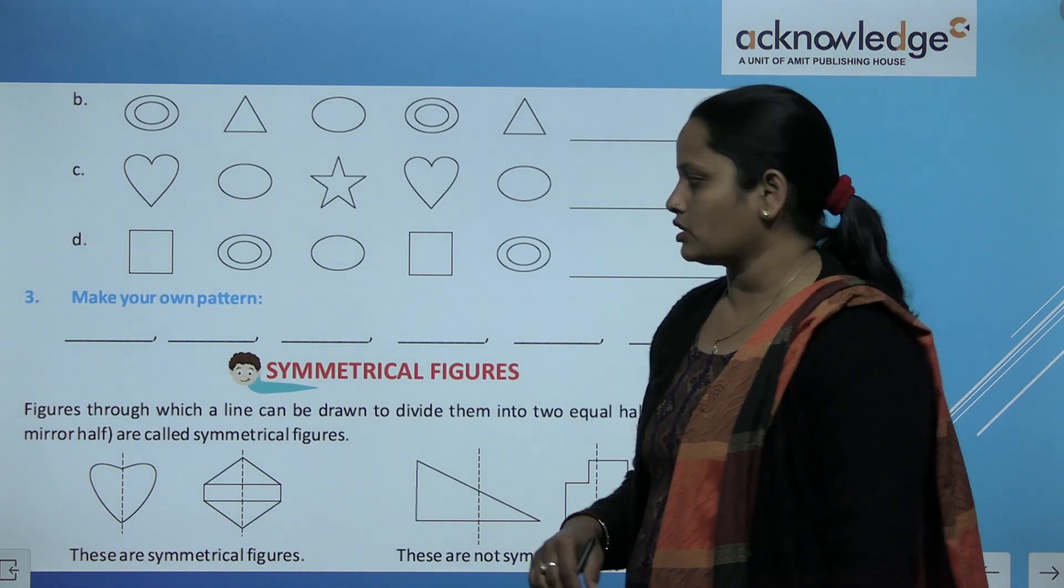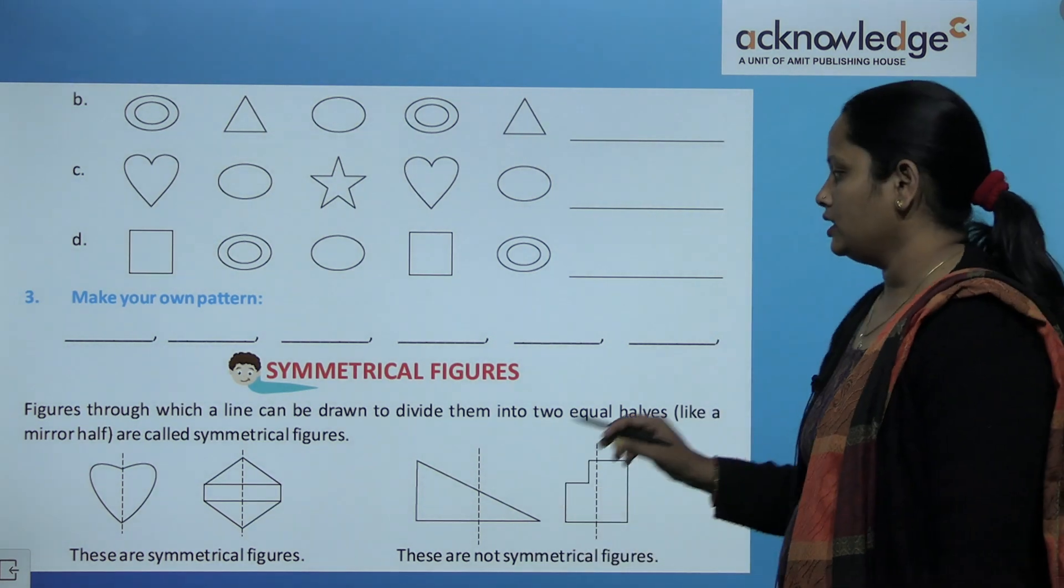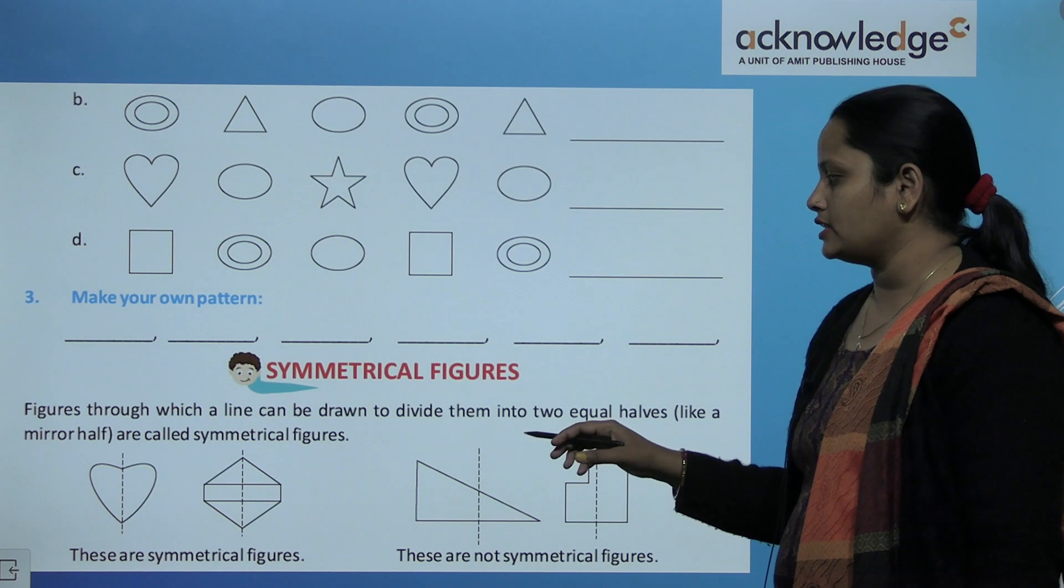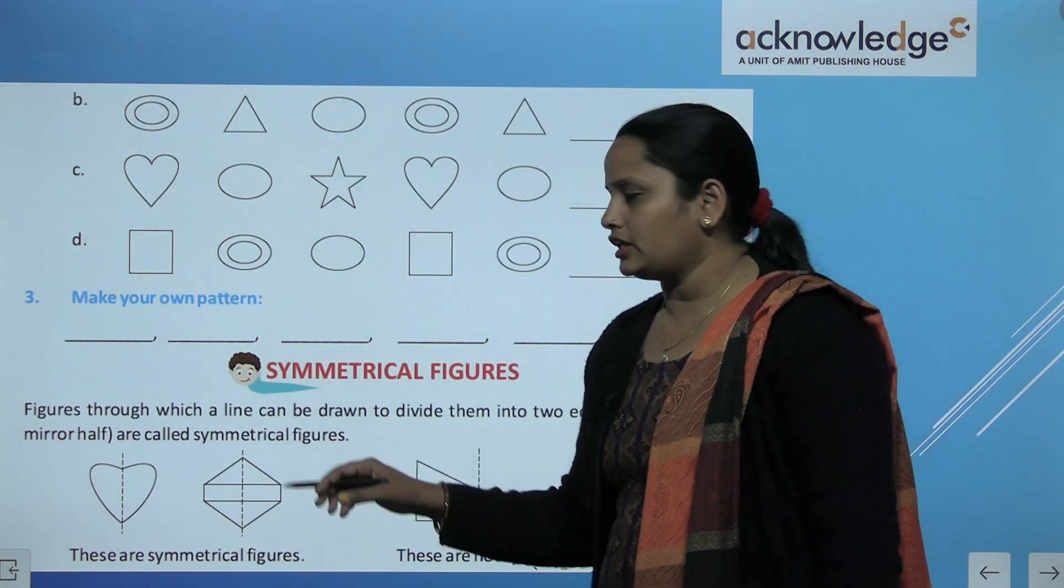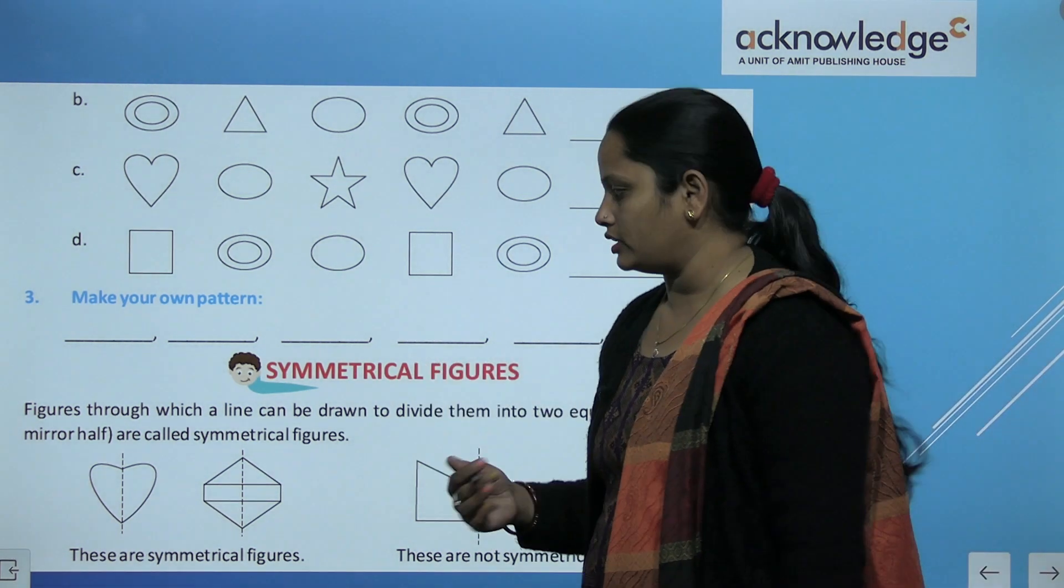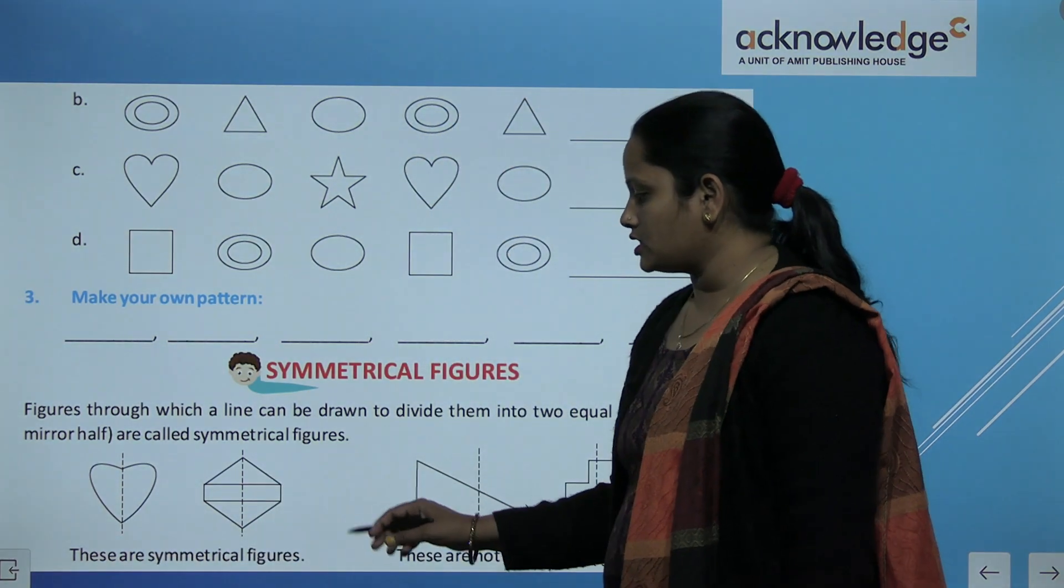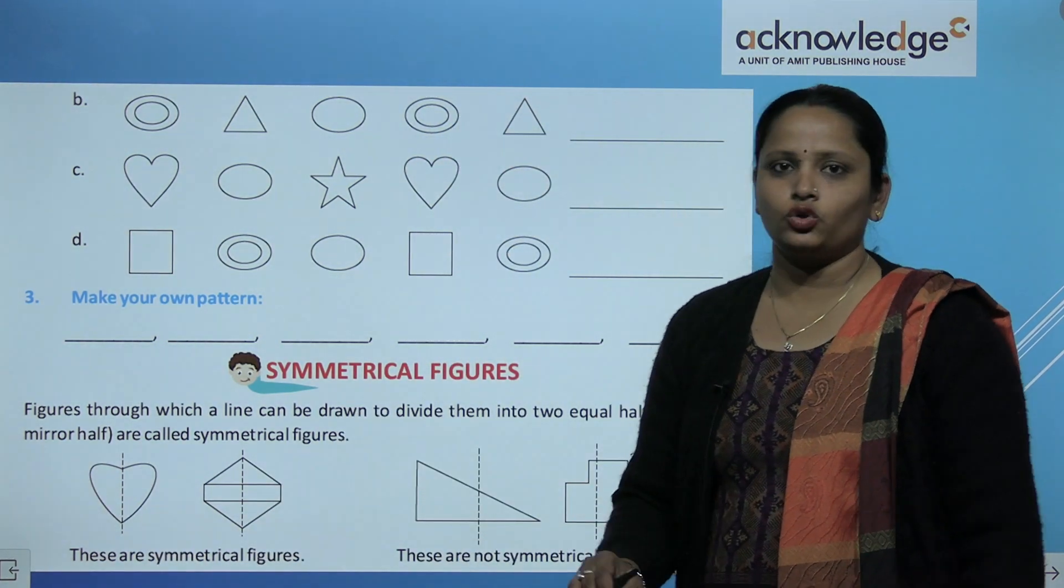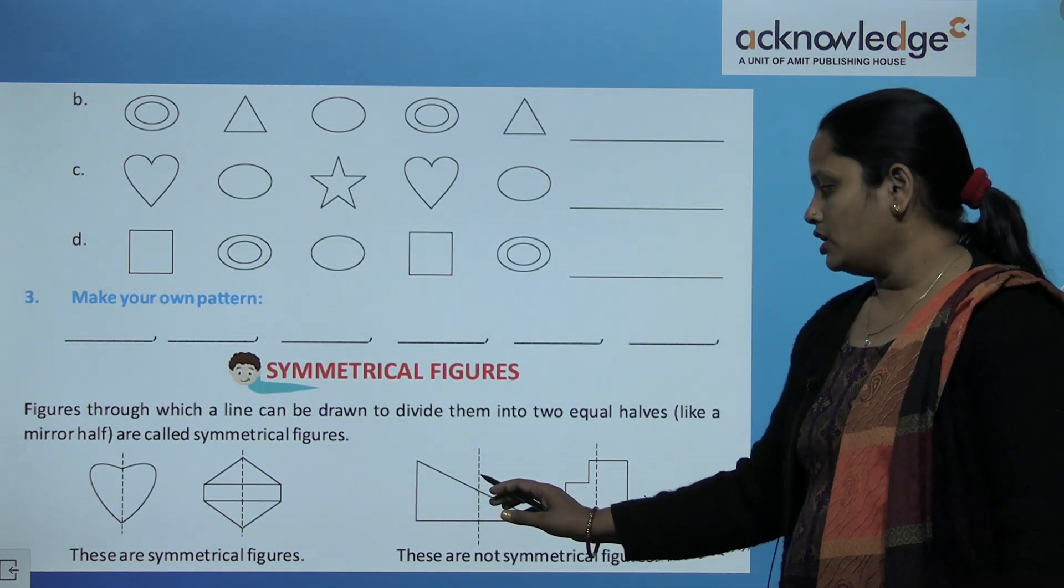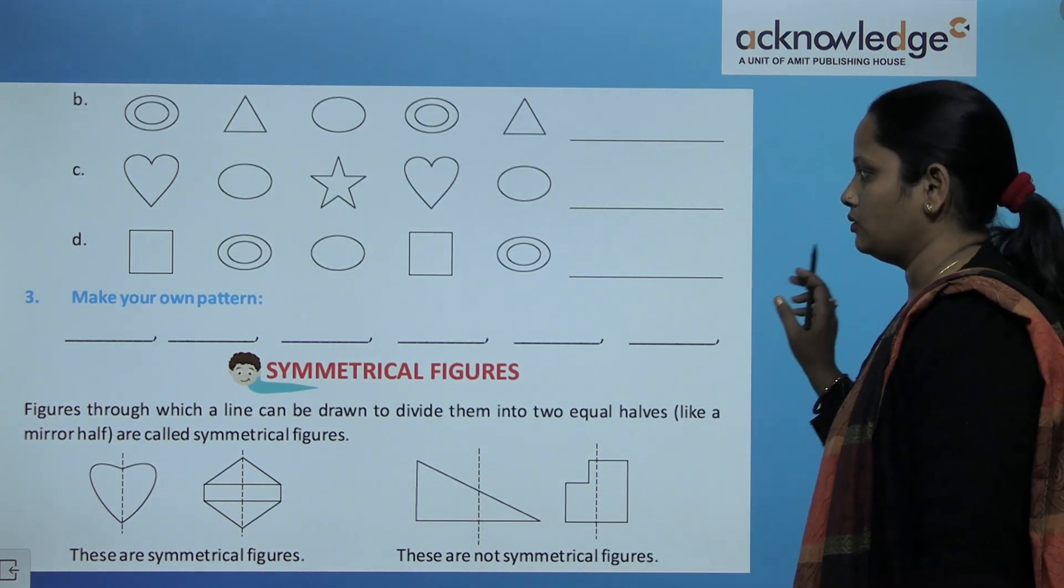Now what else? Symmetrical figures. Symmetrical figures kya hoti hai? Figures through which a line can be drawn to divide them into two equal parts. That is called symmetrical. Means ek figure ko hum uska half karna. So here you can see there is a figure. These are symmetrical figures. Means agar hum usse half kar de toh dono sides same dikhe. So these are not symmetrical figures.